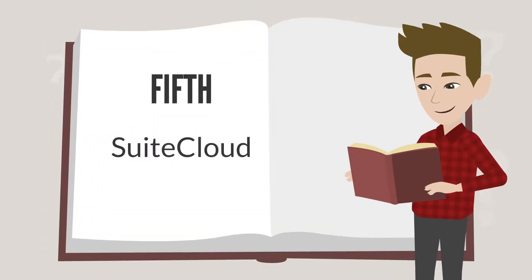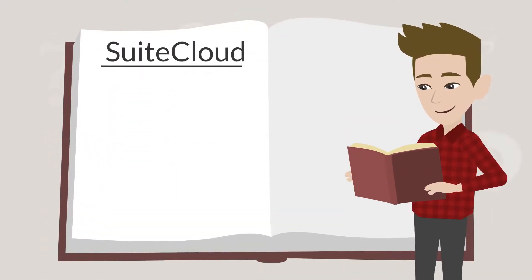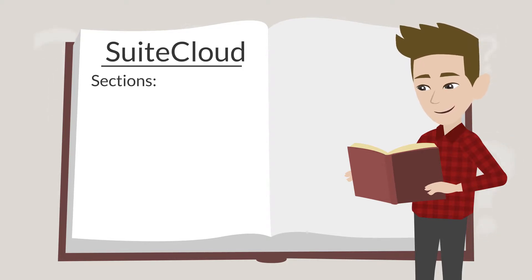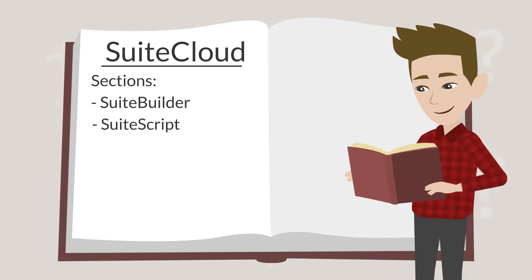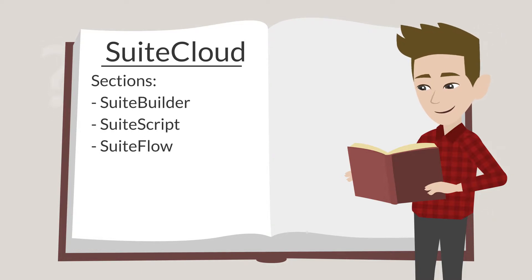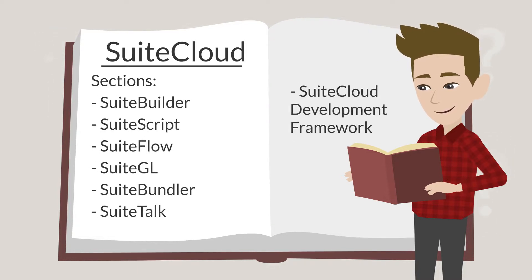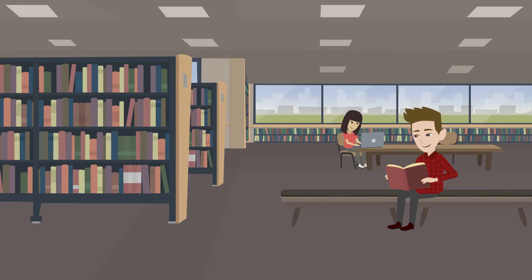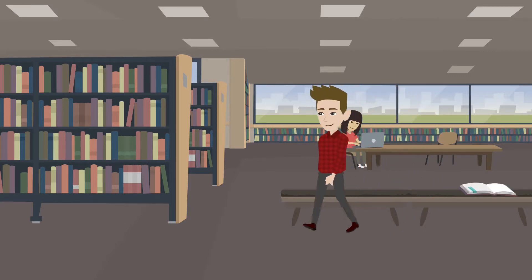The final subtab under Enable Features is SuiteCloud. The sections under this subtab were all specially developed by NetSuite for NetSuite. These include SuiteBuilder, SuiteScript, SuiteFlow, SuiteGL, SuiteBundler, SuiteTalk, and SuiteCloud Development Framework. Because these are so integral to how NetSuite functions, we would strongly recommend that you take extra time reviewing the features that can be enabled under each of these sections.